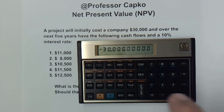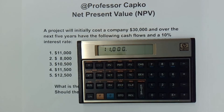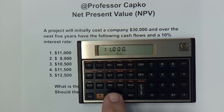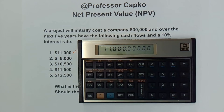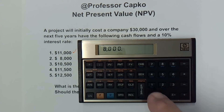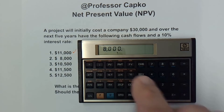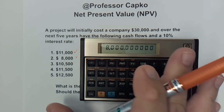The next cash flow is positive — it's coming into the company in the first year, and it's $11,000. So I type in 11,000. That's going to be CF sub-I, so I hit G and then that button for the 11,000. I check it off so I know I've taken care of that. Then I type in 8,000 for the second year — again hit G and that same CFI — and it puts it in the next entry. Check that one off.